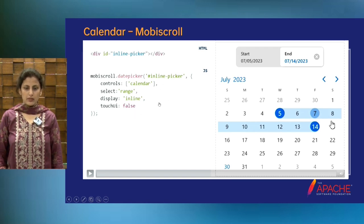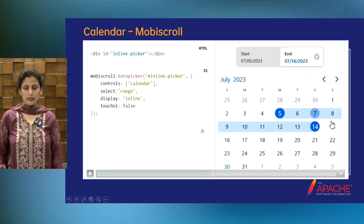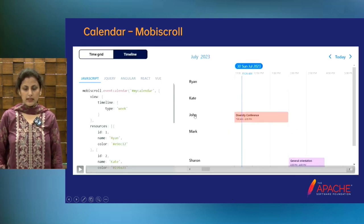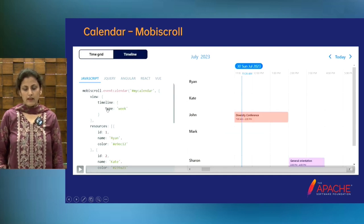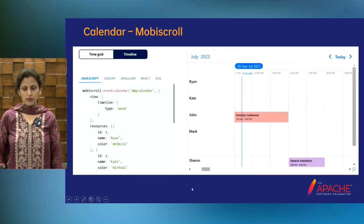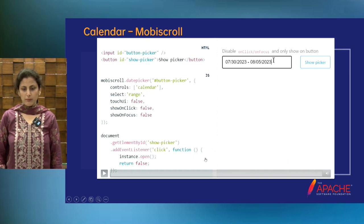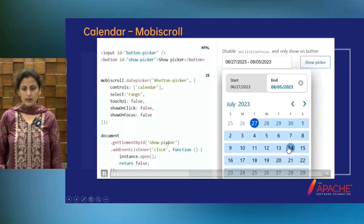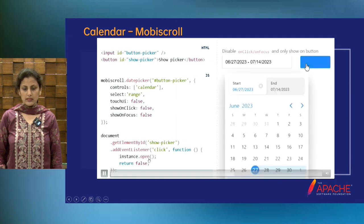This is the inline display — the area of this display will be the same as the calendar in the JavaScript of MobiScroll. We just have to set some parameters like calendar, range, inline, and touch false because it is for the desktop screen. This is again an example of MobiScroll where we have set the timeline and added resources. We have set elements and it shows the picker on click, with an event listener for the click that opens the instance and returns false.